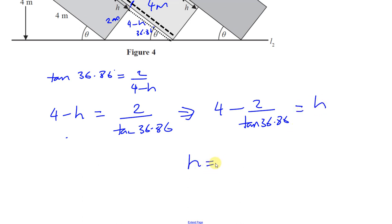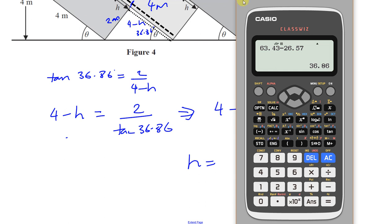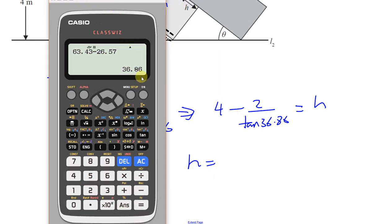So 4 minus 2 divided by the tangent of 36.86 gives us 1.3323.